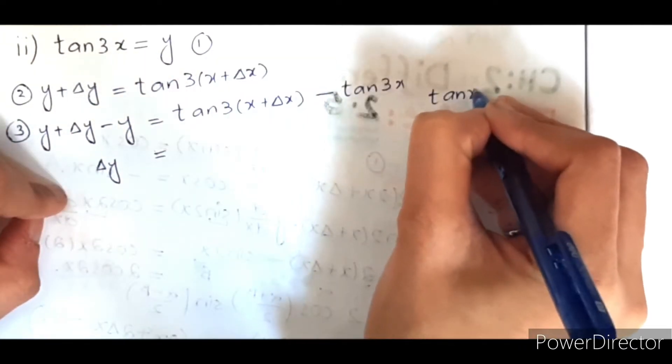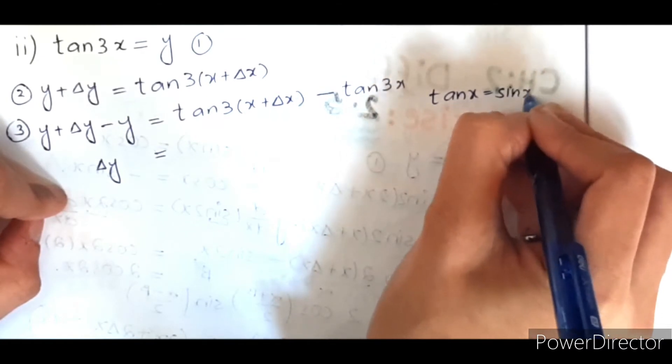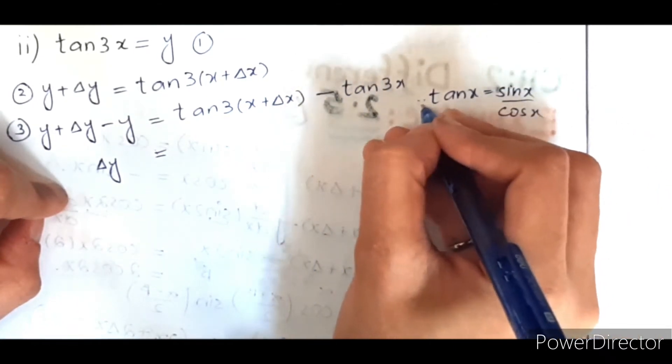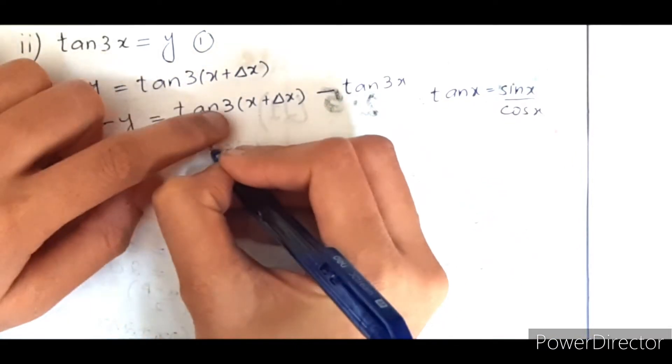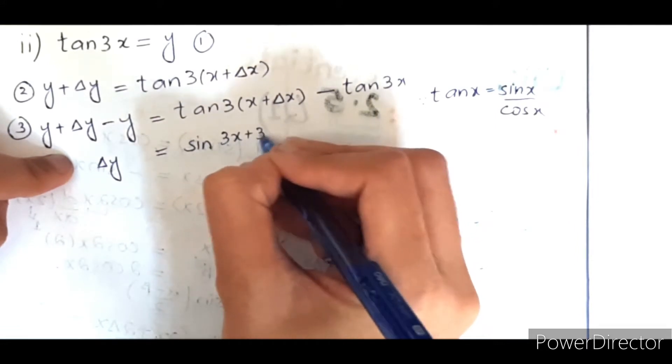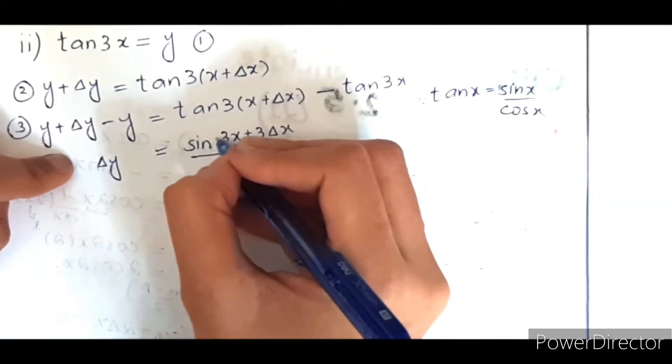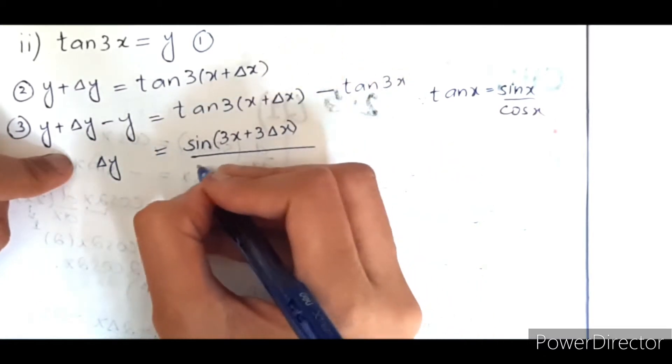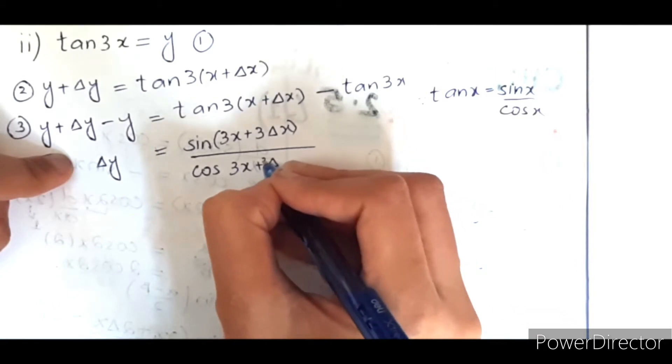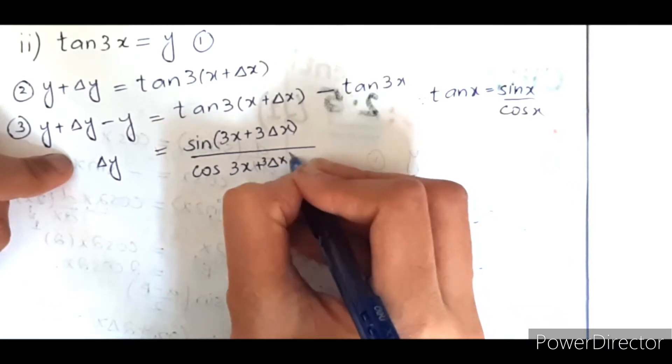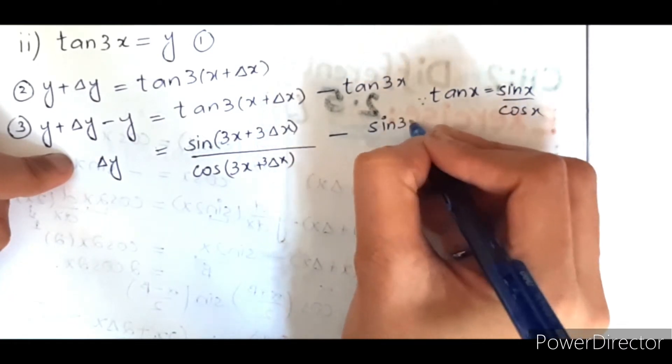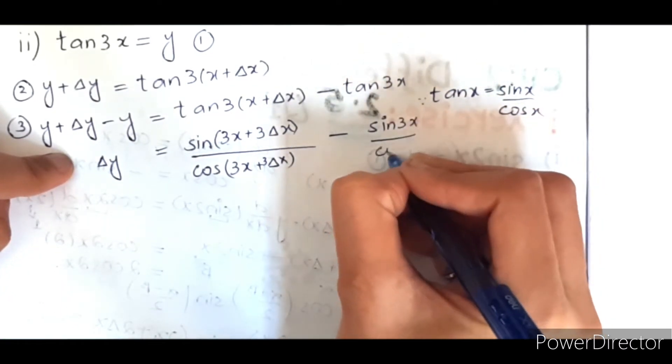Tangent is equal to sine over cosine, so putting that: sine 3x plus 3 del x divided by cos 3x plus 3 del x minus sine 3x divided by cos 3x.